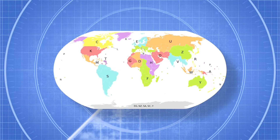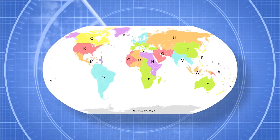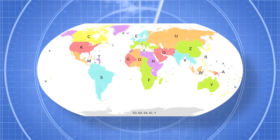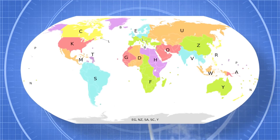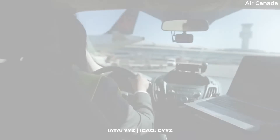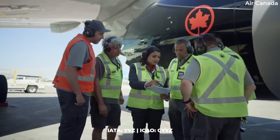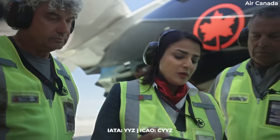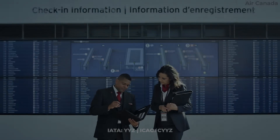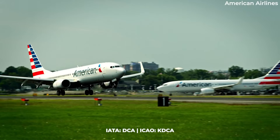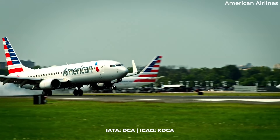But why was K used specifically instead of another letter? The letter C is used as the prefix for Canadian airports, which makes a lot of sense — think C for Canada. Unfortunately, we couldn't find a clear reason for why K was assigned to the US instead of, perhaps, the letter A.